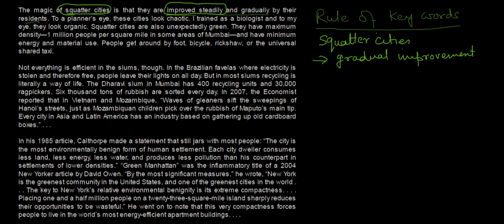We can also say gradual change or gradual transformation — all these are related words, they mean the same thing. To a planner's eye, these cities look chaotic. I trained as a biologist and to my eye, they look organic. Notice that the words chaotic and organic are antonyms here — chaotic means something very random with no order, and organic means something ordered, regimented, which grows gradually.